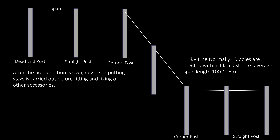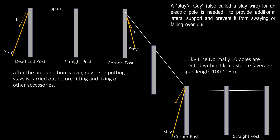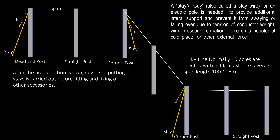In the picture, we see some poles are positioned on a straight line and a few are on a corner to match the route of the line, and the yellow line shows the position of stays of the poles. A stay or guy, also called stay wire, for an electric pole is needed to provide additional lateral support and prevent it from swaying or falling over due to tension of conductor weight, wind pressure, formation of ice on conductor at cold places, or other external forces — essentially reinforcing the pole stability by counteracting unbalanced forces acting on it.